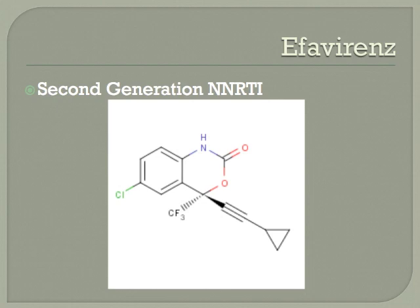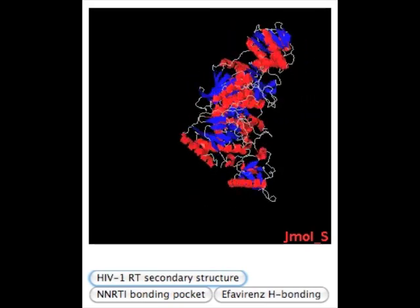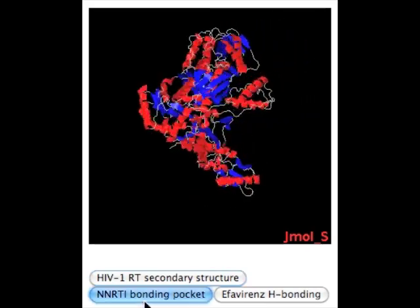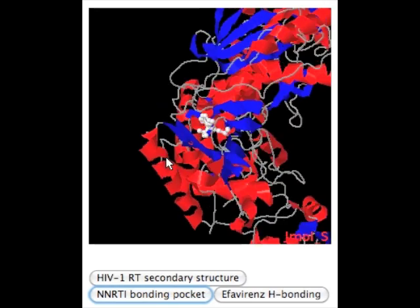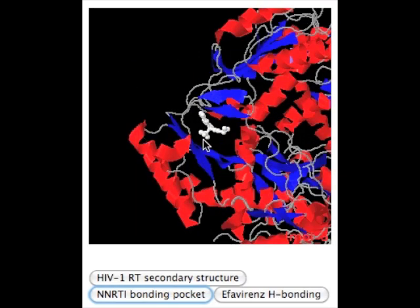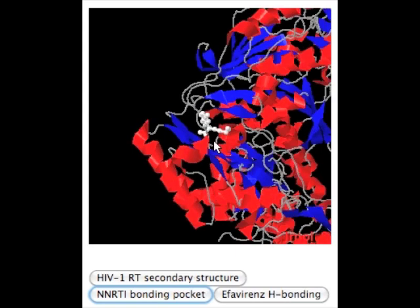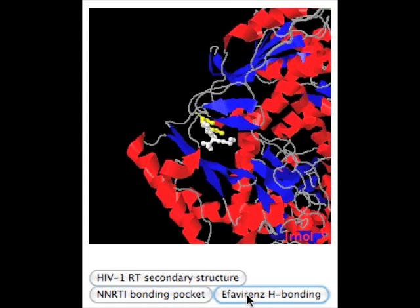Our molecule, efavirenz, falls into the category of non-nucleoside reverse transcriptase inhibitors. Here in this JMol representation is HIV-1 reverse transcriptase. As you can see, the NNRTI binding pocket is located in the palm domain adjacent to the polymerase active site. The molecule of efavirenz, highlighted in white, is stabilized in the binding pocket by both H-bonding and hydrophobic interactions.